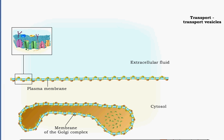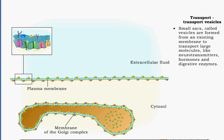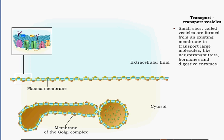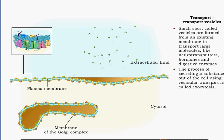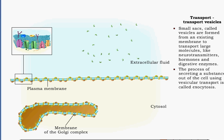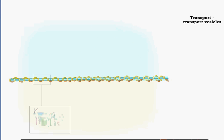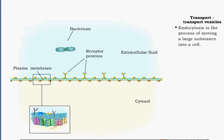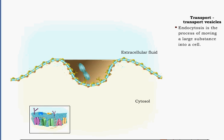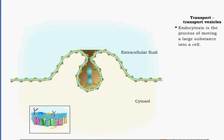Larger molecules, such as proteins, require movement of entire sections of the membrane. A small round sac, called a vesicle, is formed from an existing membrane and used for transport. The process of secreting a substance out of the cell using vesicular transport is called exocytosis. Phagocytosis, the ingestion by a cell of large particles or cells such as a bacterium, is an example of this process.